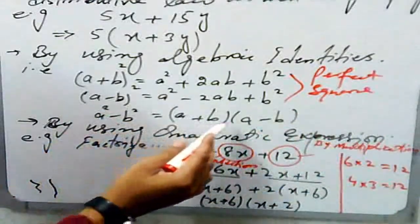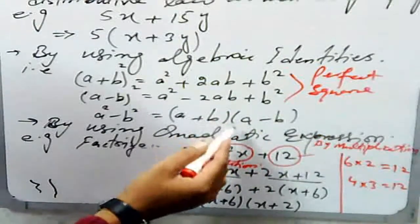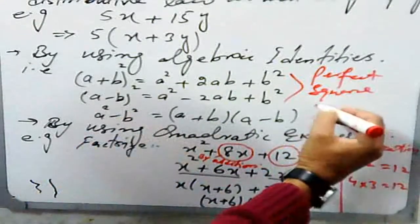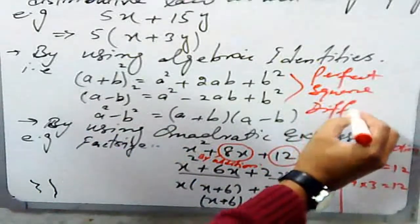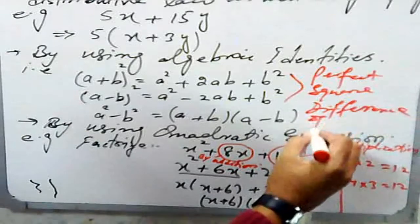And a² - b² = (a+b)(a-b), where 'into' means multiplication. These two brackets multiply with each other, so it is known as the difference of two squares formula.